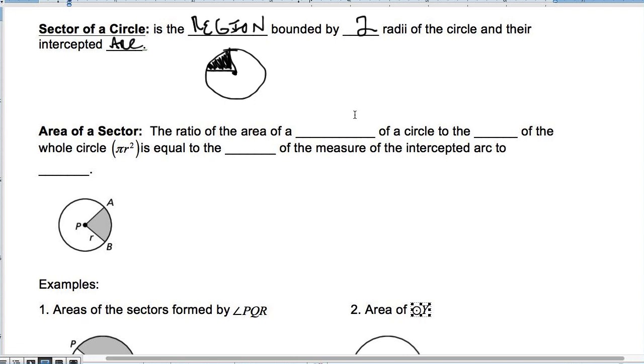All right, the area of a sector, okay? So how much pizza is we getting or how much pie? Ooh, what's your favorite kind of pie? It's a hard question. Anyway, moving on. Okay, the ratio of the area of a sector of a circle to the area of the whole circle, pi r squared, is equal to the ratio of the measure of the intercepted arc to, yep, you guessed it, 360 degrees. What in the world are we even talking about here?